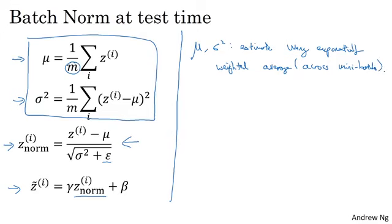So to be very concrete, here's what I mean. Let's pick some layer L and let's say you're going through mini-batches x1, x2, together with the corresponding values of y, and so on.